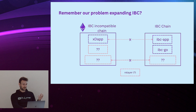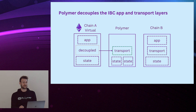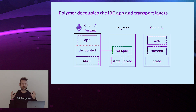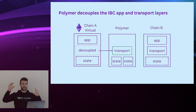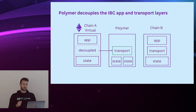Remember the problem — in the worst case scenario we have all these components to develop. What Polymer does is essentially decouple the IBC app and transport layers in a more literal sense: we actually put the transport layer on a different chain. This is comparable to modular blockchain thinking, where execution, data availability, consensus, and settlement can live on different chains, still making up a logical blockchain. Similarly for interoperability — application layer, transport layer, and state layer can live on different blockchains and still form a logical interoperability model.